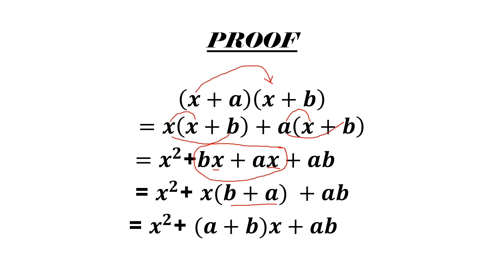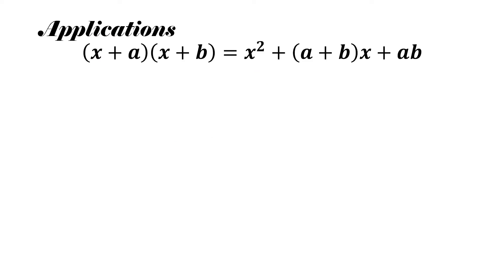Now if we have any binomial of the form (x + a)(x + b) to multiply, instead of following all the steps of multiplication we can apply this identity and arrive at the solution directly. Make sure your binomial is of the form x plus a into x plus b to use this particular identity.